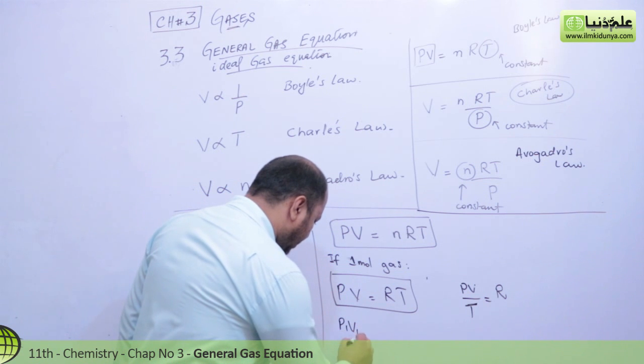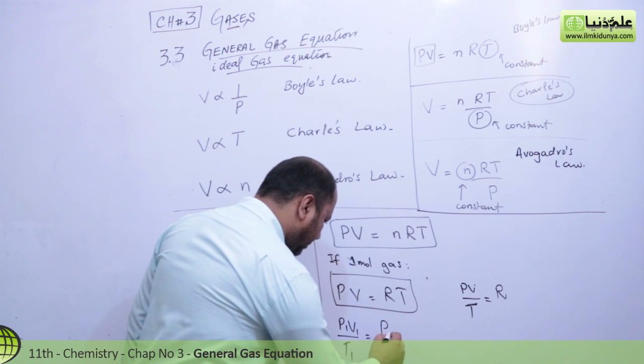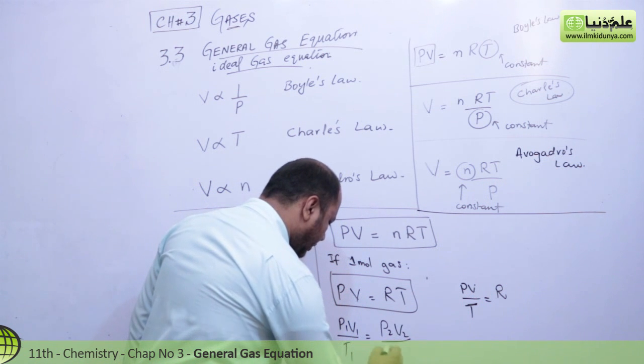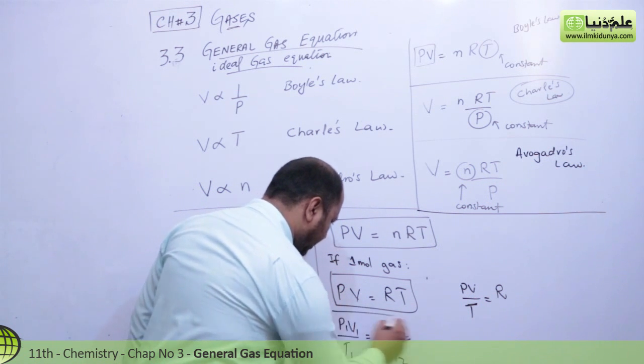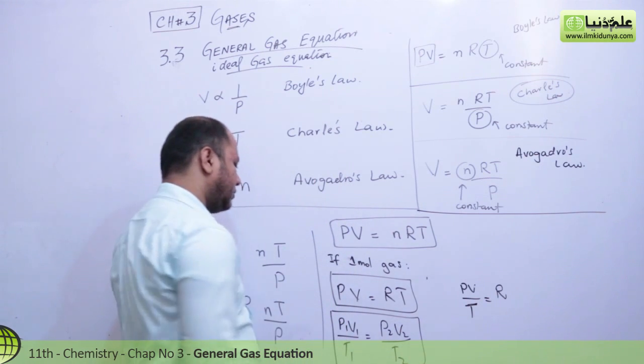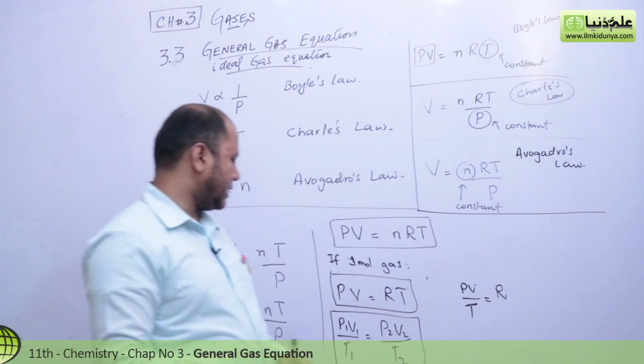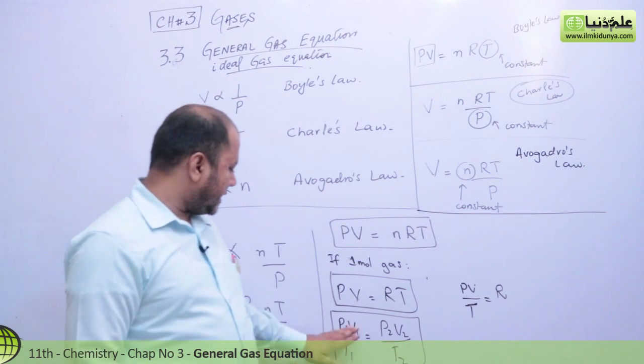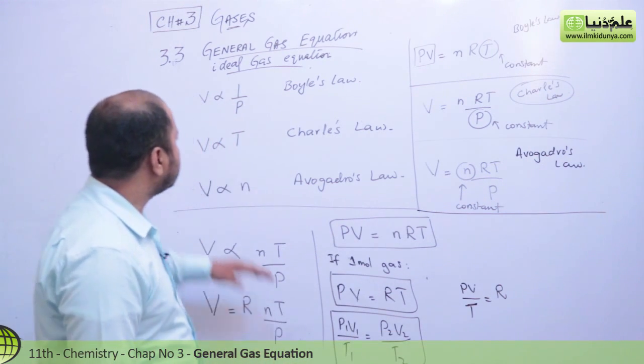P1V1 over T1 equals P2V2 over T2. This is what you get. If you have one mole of gas, this is the formula. You can compare two cylinders with this. That is called the general gas constant.